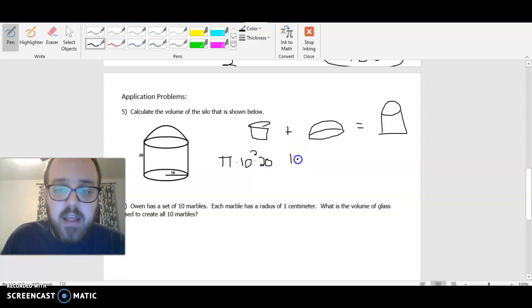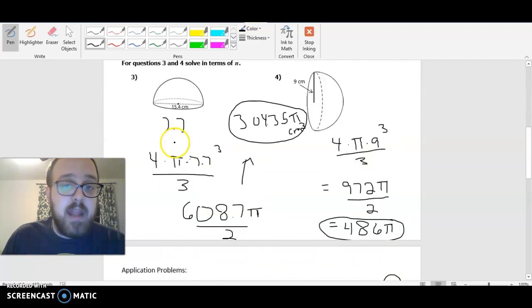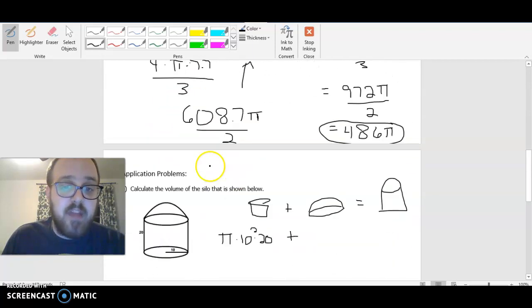I don't see any markings up here. How do I know what's going into this hemisphere? Well, the only number I need to figure out, if I remember, is the radius. So I need to figure out what the radius of this hemisphere is. And even though I don't see it,